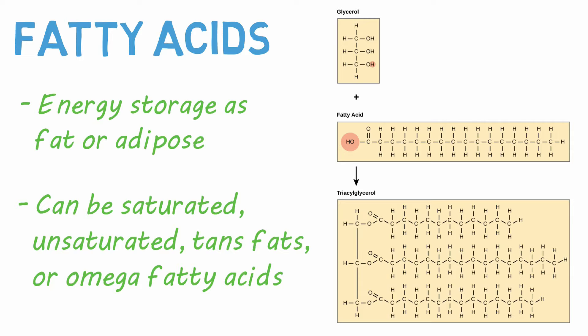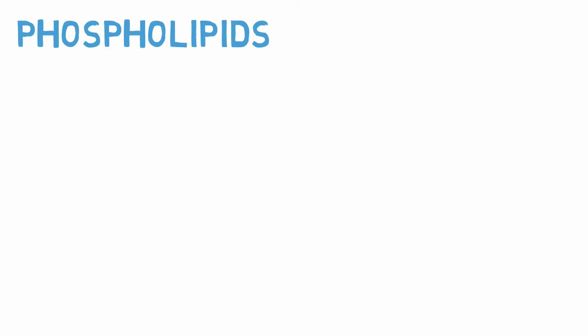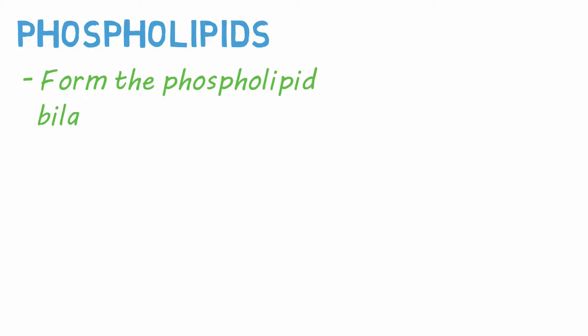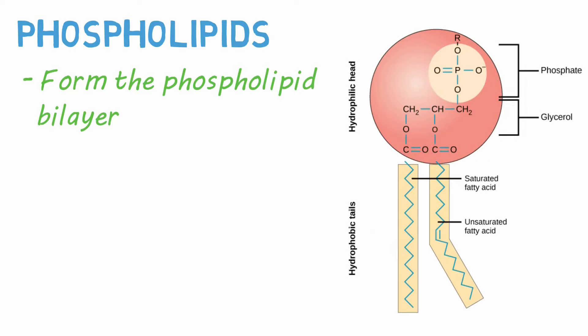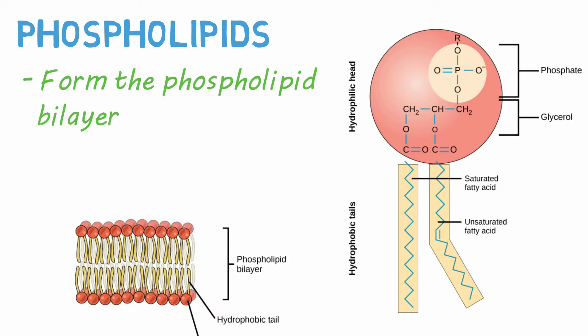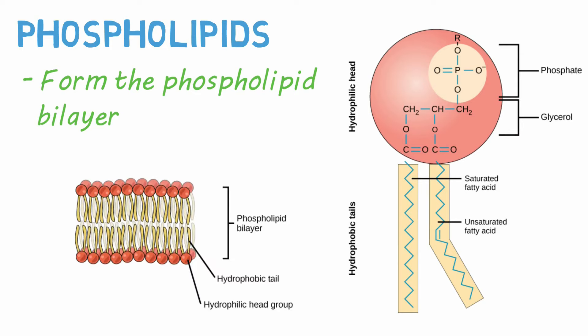Another molecule that incorporates the fatty acid chain is the phospholipid, most famous for its formation of the phospholipid bilayer, which protects a cell from outside intrusion. Phospholipids contain two non-polar fatty acid tails bound to a polar phosphoglycerol head. This is why they form a bilayer — the non-polar tails are attracted to each other and the heads are attracted to water solutions in and out of the cell.